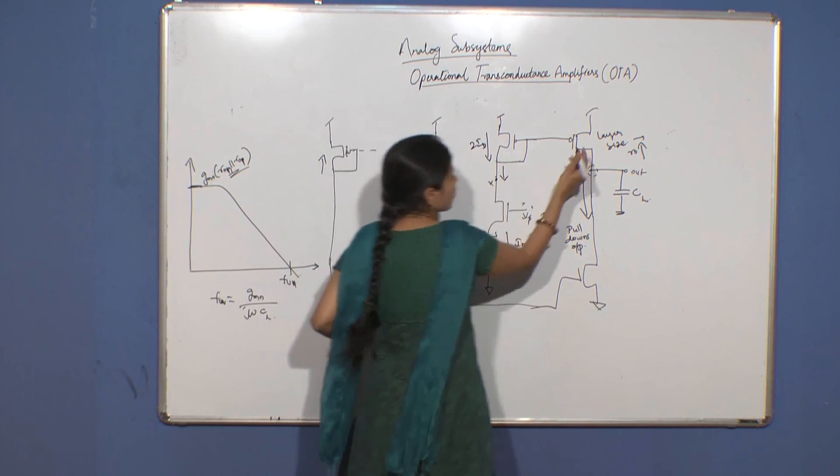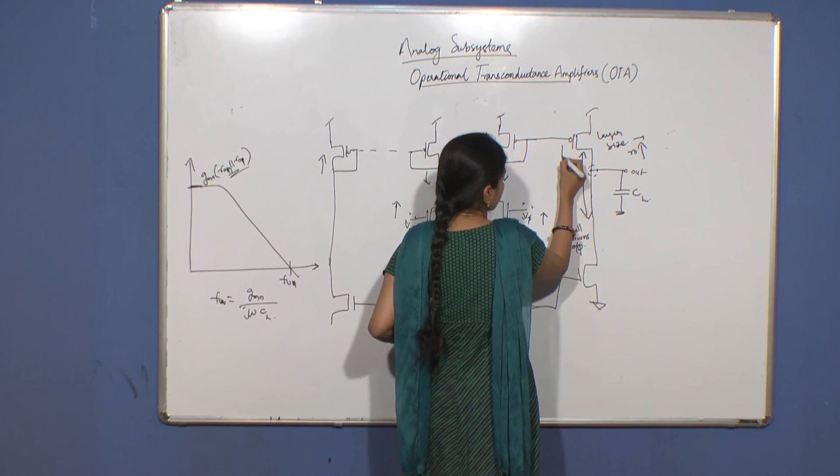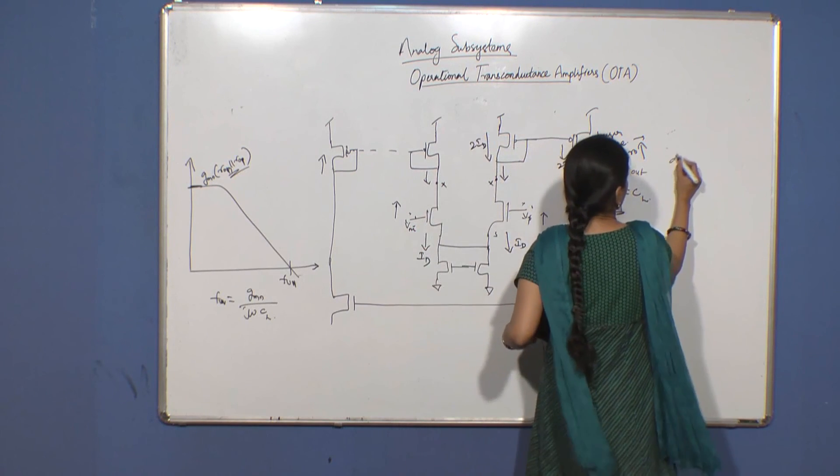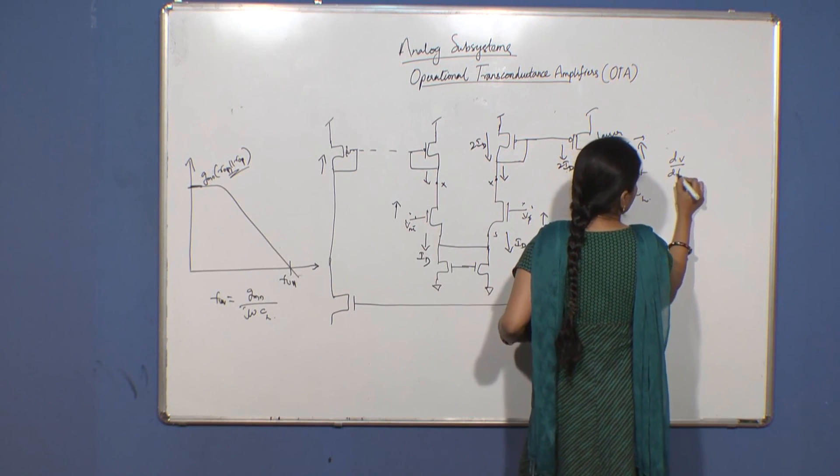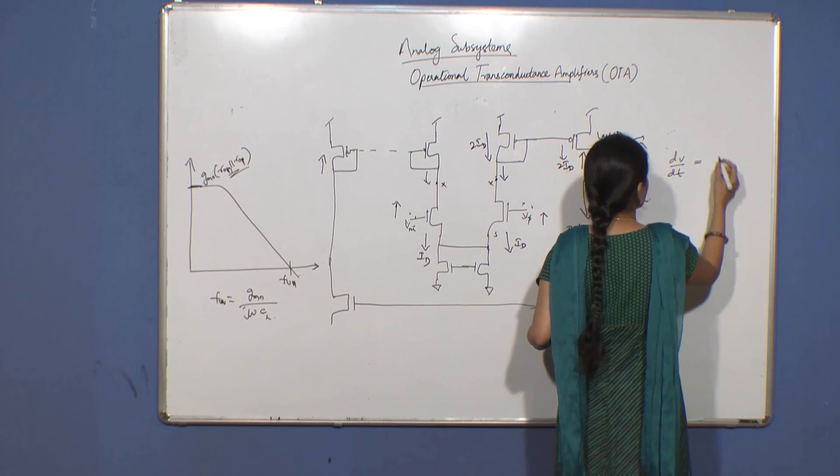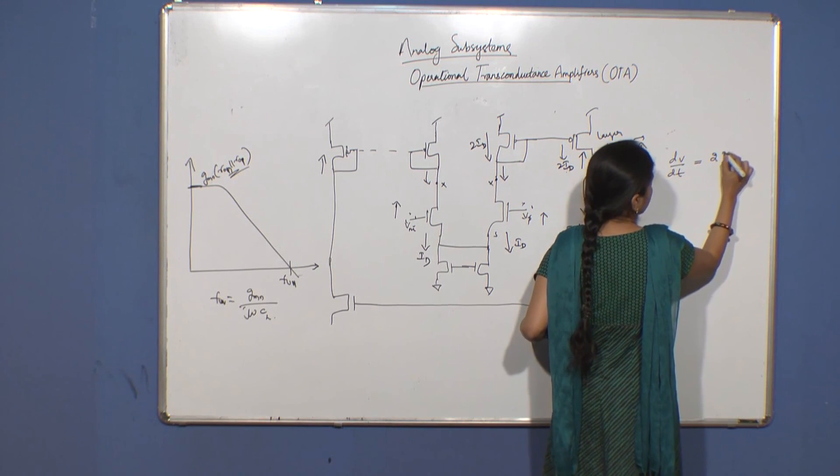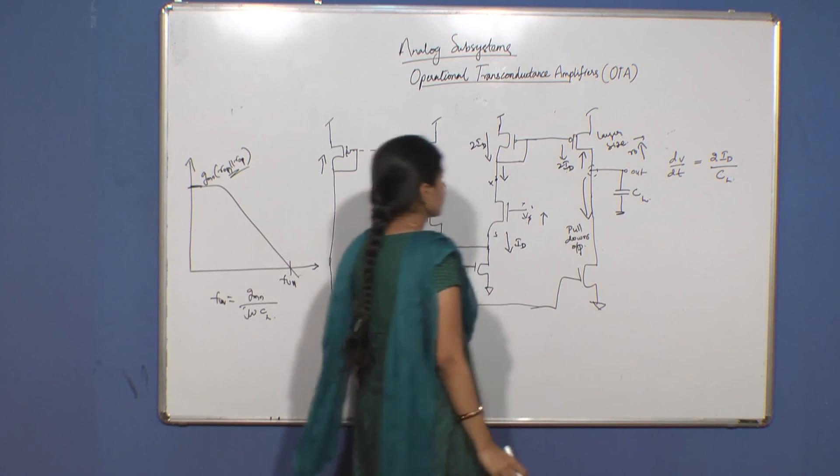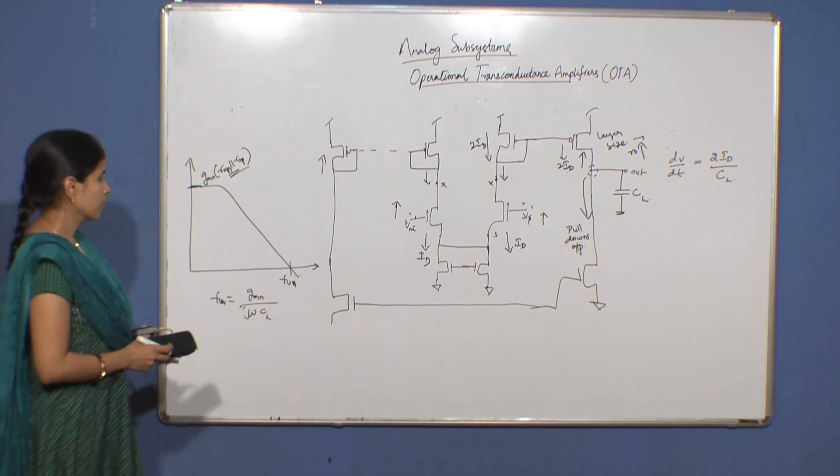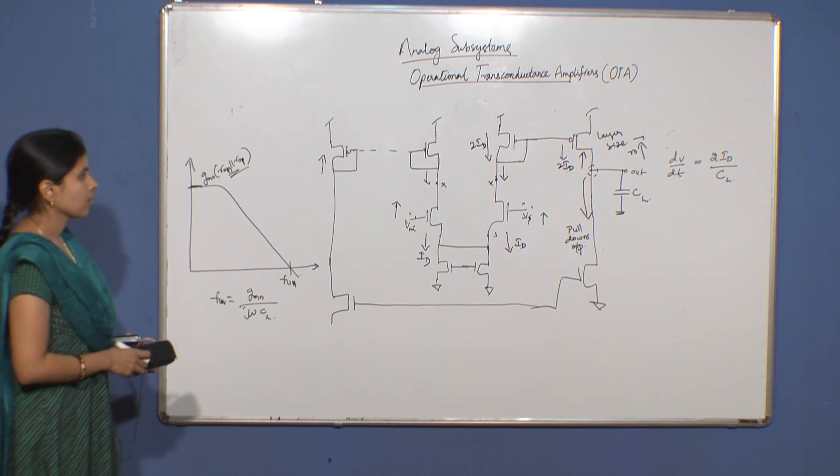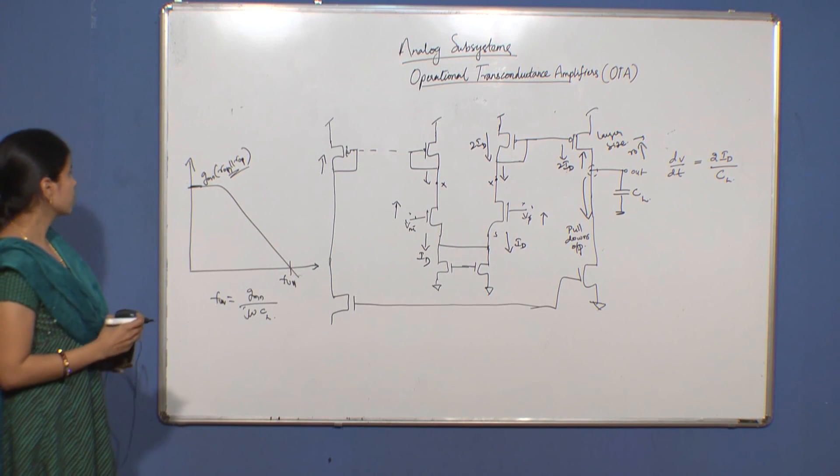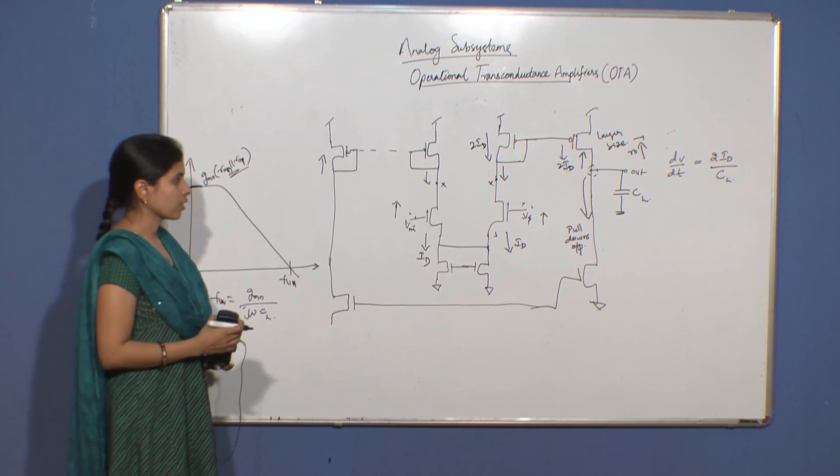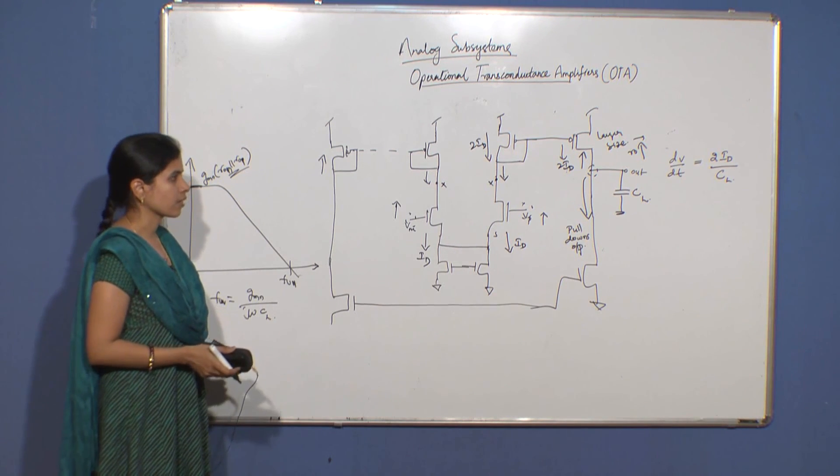The same is mirrored in this circuit, which is 2ID. So your dV/dt is now equal to 2 times ID by CL. This is actually the folded cascode architecture of the operational transconductance amplifier.